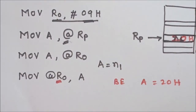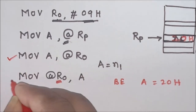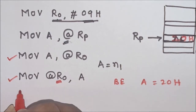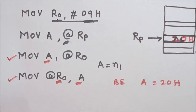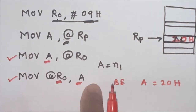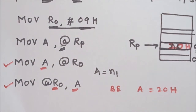Here R0 is used as a pointer. The important thing is that we can write this instruction in only two ways, and one of the operands must always be the accumulator — we cannot use any other register. So these instructions are used as indirect addressing mode for internal RAM memory.